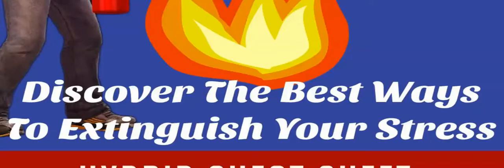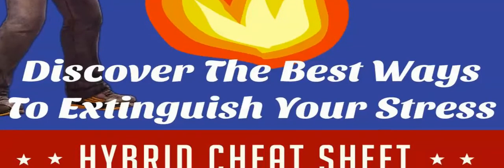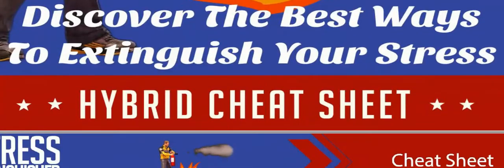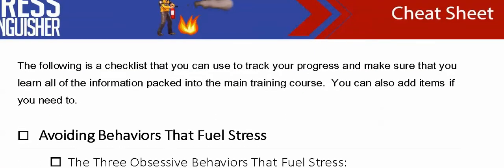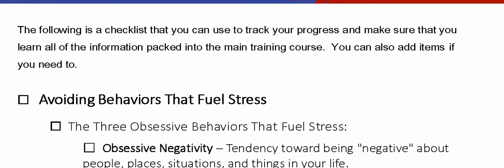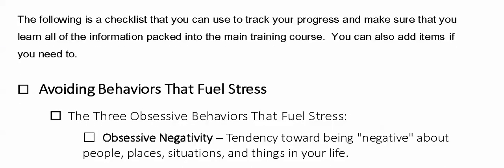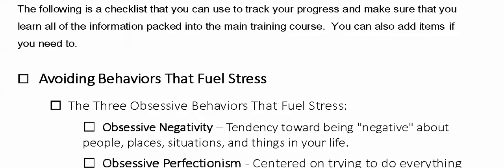All right, here we go. This is the next video in the series. This is what's called the cheat sheet, and you can read on the screen — it talks about this follow checker that you use to track your progress and make sure you learn all the information back in the main training course. You can also add to it if you need to.